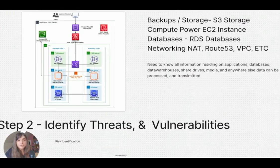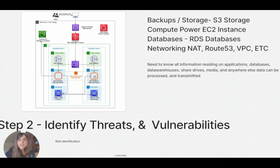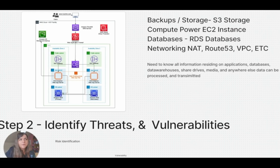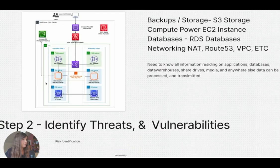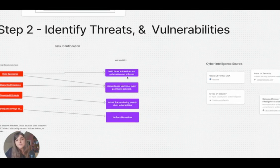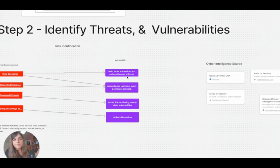Now we have to figure out vulnerabilities. You could get a penetration test, or use a vulnerability scanner such as Qualys or Nessus to scan for common vulnerabilities. You could look at historical data, do bug bounty programs where people bring you vulnerabilities they find on your web application, or do code reviews. For this environment, the vulnerabilities we found are: multi-factor authentication was not enforced, misconfigured identity access management roles, a lack of monitoring, and no backup routines.